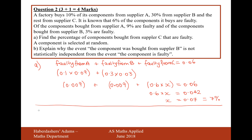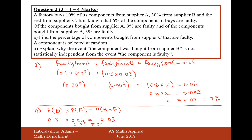If we want to check whether two events are independent, we check whether P(B) times P(F) equals P(B and F). The probability of B is 0.3, the probability that a product is faulty is 0.06, and the probability that it's from B and faulty is 0.03. Calculating the left-hand side: 0.3 times 0.06 gives us 0.018, which does not equal 0.03, so therefore not independent.